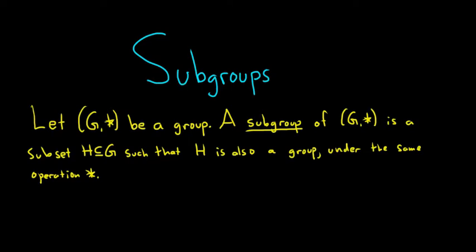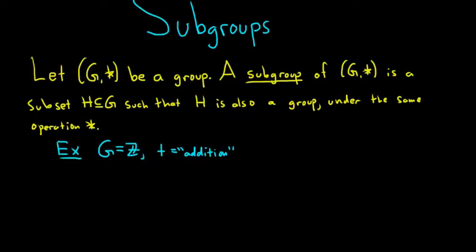In this video, we're just going to look at various examples of subgroups. So let's start with G equal to the set of integers, and the operation here will be addition. And then one subgroup could be H, which we'll denote as 3ℤ.